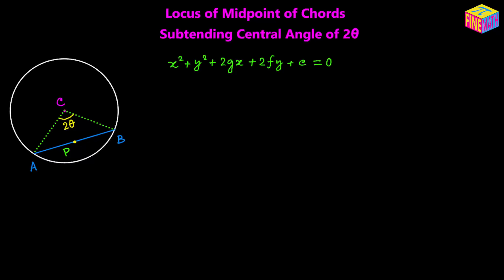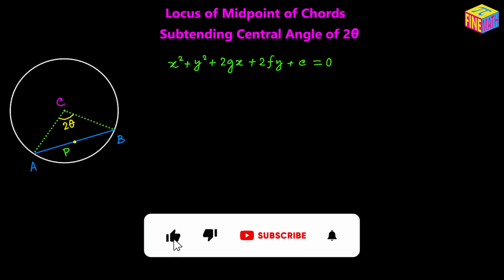In this video we are going to see how to find the locus of the midpoint of a chord that subtends a central angle of 2 theta for a given circle. Let's suppose we have a circle having the center at point C and there is a chord AB whose midpoint is P, and this chord subtends a central angle of 2 theta at the center.